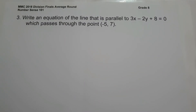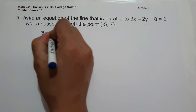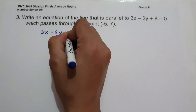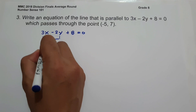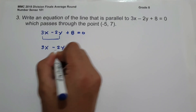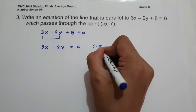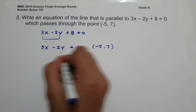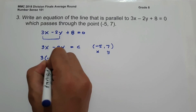On number 3, write an equation of the line that is parallel to 3x minus 2y plus 8 equals 0, which passes through the point negative 5, 7. To find the equation parallel to 3x minus 2y plus 8 equals 0, let us use 3x minus 2y equals c, and use this to find the constant c using the point negative 5 and 7. So let us substitute x and y: 3 times negative 5.